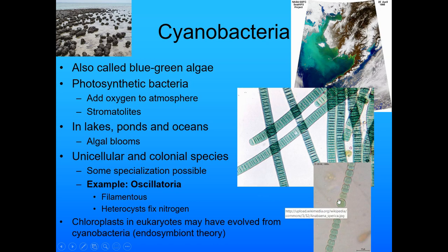Cyanobacteria have heterocysts, which are specialized cells that fix nitrogen. We think that the chloroplasts in eukaryotic plants may actually have evolved from cyanobacteria, similarly to how mitochondria were hijacked. That theory is called the endosymbiont theory.